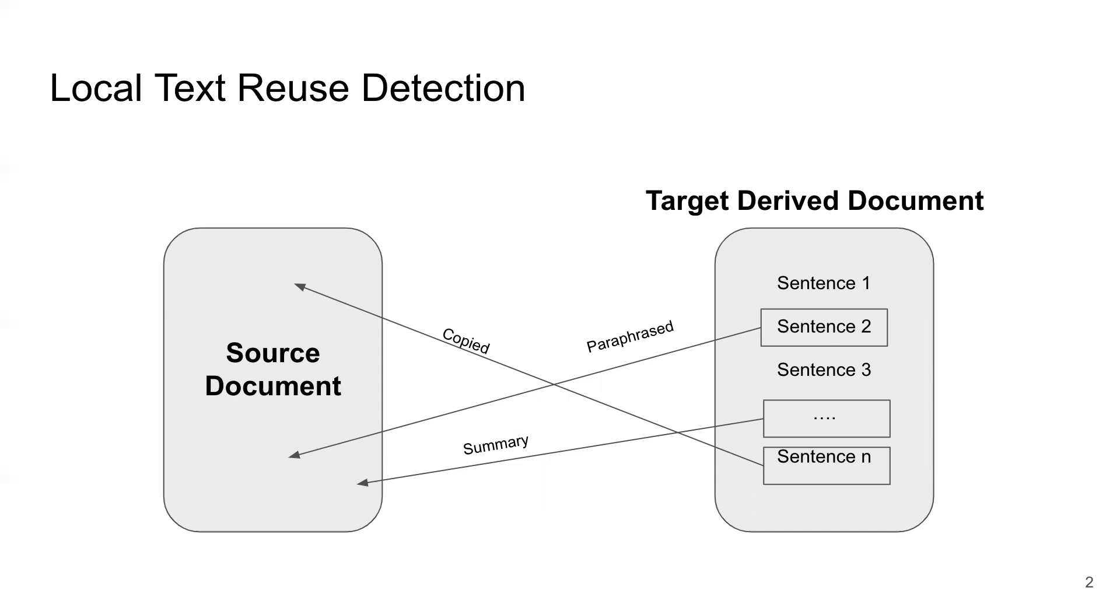At a high level, these problems boil down to comparing the text of the source and the derived documents and trying to infer some sort of fuzzy alignment between subsequences in both of them. These alignments don't necessarily have to be exact copying, but could try to capture other forms of reuse such as paraphrasing or summarization.